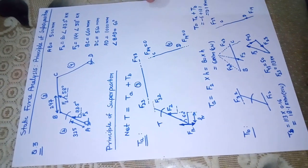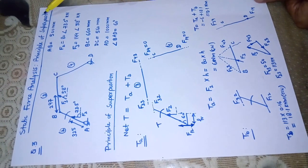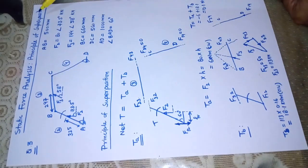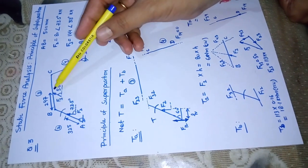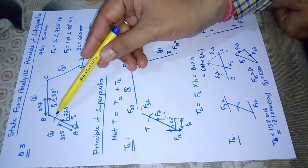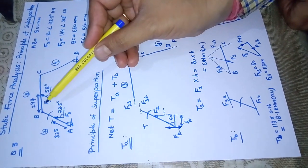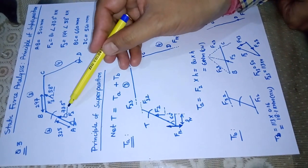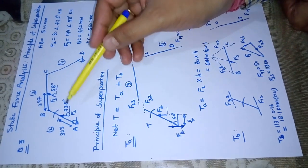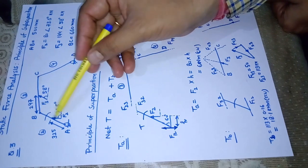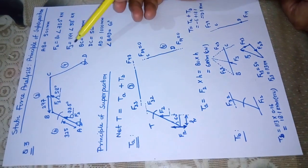We are going for the third problem for static force analysis where we are discussing the principle of superposition. The principle of superposition is used when more than one force or more than one input is present and we want to determine an output. In this particular problem we have a four-bar mechanism in which two forces F2 and F3 are acting on different links, and we are supposed to determine the value of torque on link AB so that it can make this four-bar mechanism in static equilibrium.